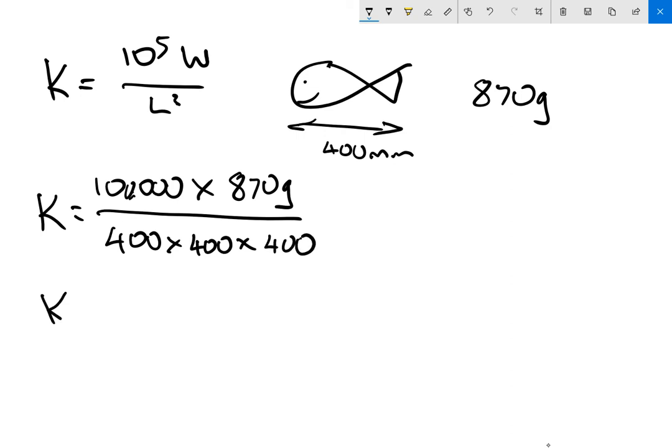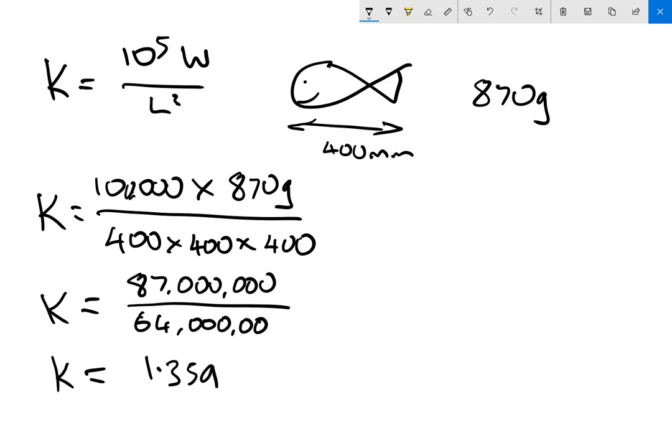So therefore, K equals 87 million divided by 64 million. OK, we've plugged that into our calculator, and we see that K equals 1.359. Now, we always round it to two decimal places. So K equals 1.36.